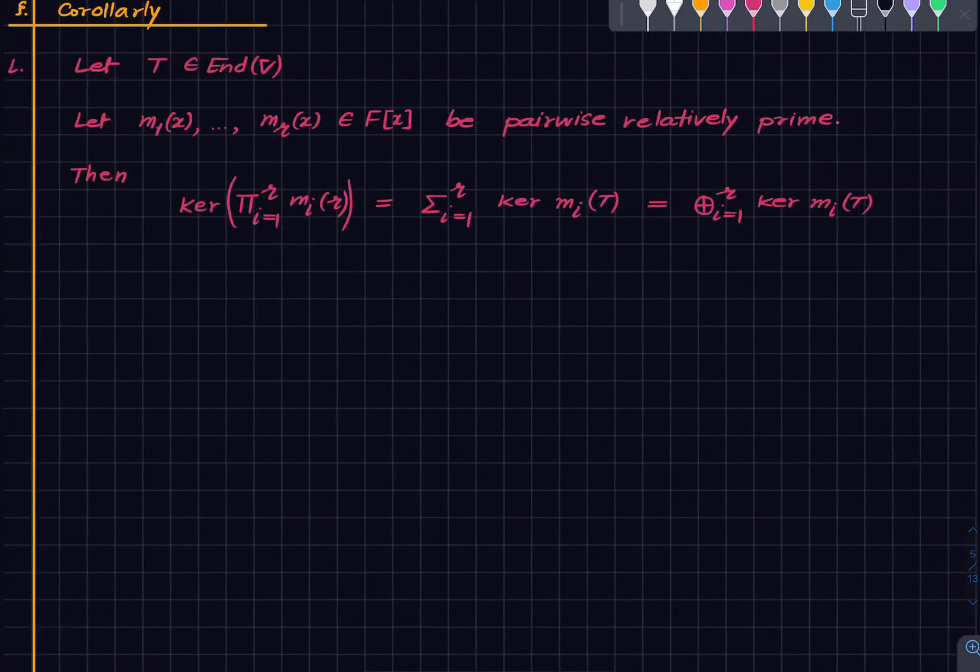So here is our first corollary. It is just an inductive application of the previous one. Fix an endomorphism on a vector space V. And now instead of two relatively prime polynomials, we have R pairwise relatively prime polynomials.